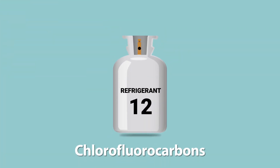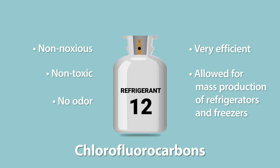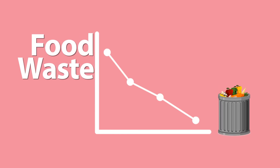So when the invention of chlorofluorocarbons came around in the 1920s and 30s, it was hailed as a huge invention — a big deal — because suddenly you had these refrigerants that weren't nearly as noxious, weren't toxic, had no odor, and were quite efficient. They allowed mass production of refrigerators and freezers especially after the Second World War, which allowed people to move away from the ice box. This ability to complete the cold chain from the producer to the end user was huge — the amount of food spoilage dropped dramatically, meaning a lot more food could make it to the table, making the whole system a lot more efficient.